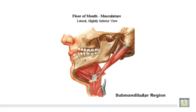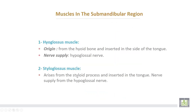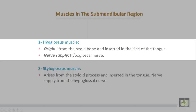This is the submandibular region, sometimes called the suprahyoid region. The first muscle of the submandibular region is the hyoglossus muscle, which takes its origin from the hyoid bone and is inserted into the side of the tongue. The nerve supply for the hyoglossus muscle is the hypoglossal nerve.